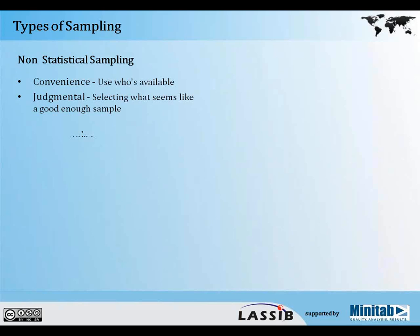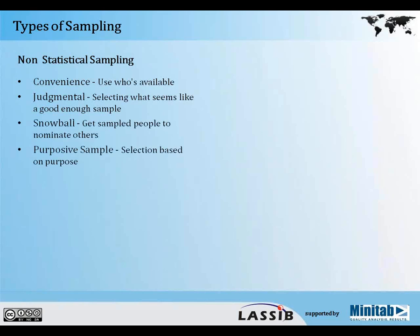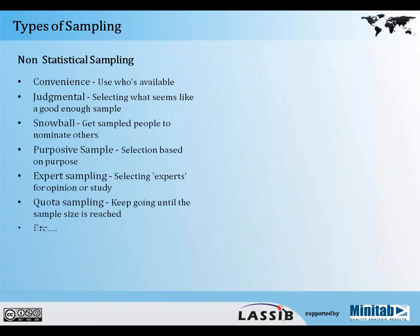There are two types of sampling: non-statistical and statistical. Non-statistical sampling is what most of us do — it's quick and easy. Types include: convenience (let's see who is available); judgmental (selecting who seems knowledgeable enough); snowball (I interviewed you, can you suggest someone else?); purposive (selection based on purpose — for example, I want to know the average shoe size of women, so I target only women); expert (calling the expert for their opinion); and quota sampling (keep taking samples until your quota is reached).